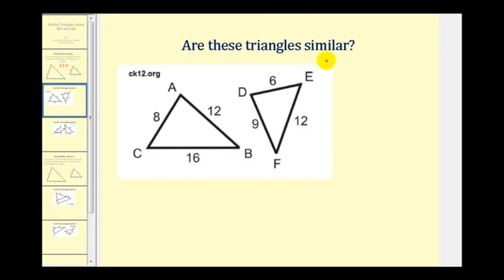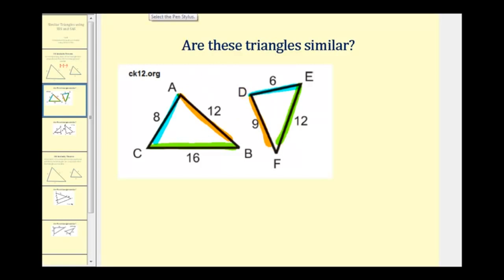Let's determine if these two triangles are similar. We must identify corresponding sides before setting up our proportion. The longest side of length sixteen corresponds to the side of length twelve, the shortest side of length eight corresponds to the side of length six, and the remaining sides correspond to each other. We then check if sixteen to twelve equals twelve to nine, which equals eight to six.